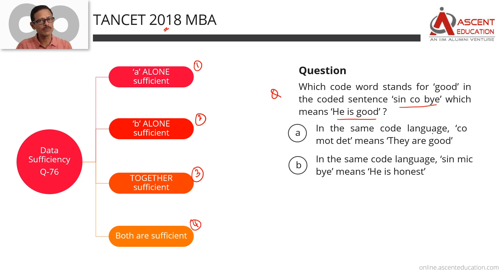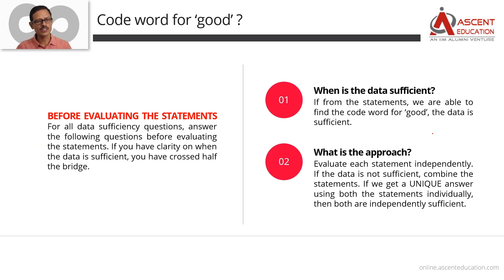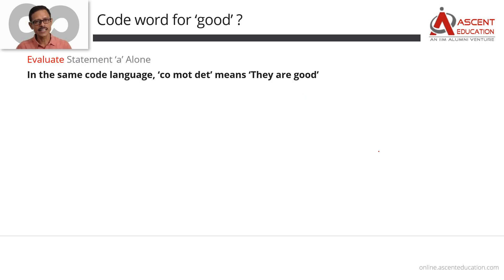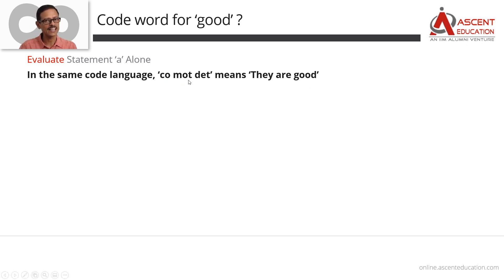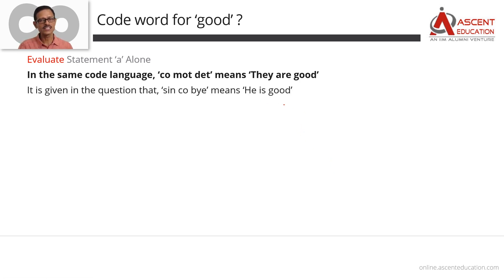We will have to find out from the statements. If we can determine this from the 2nd statement, we are done. Let's get started. We will start with: when is the answer sufficient? In the coded sentence 'sin co buy' meaning 'he is good,' if we can find out which code word stands for 'good,' then the data is sufficient. Start with Statement A. What does Statement A say in the same code language? In that same code language, the sentence 'they are good' is written as 'co mod debt.'